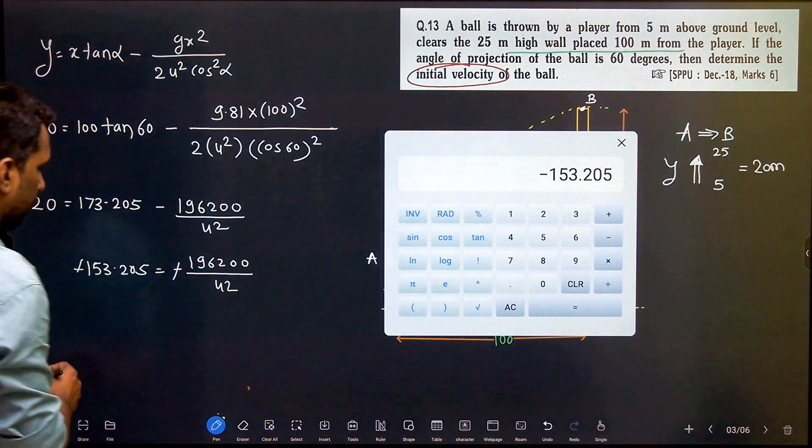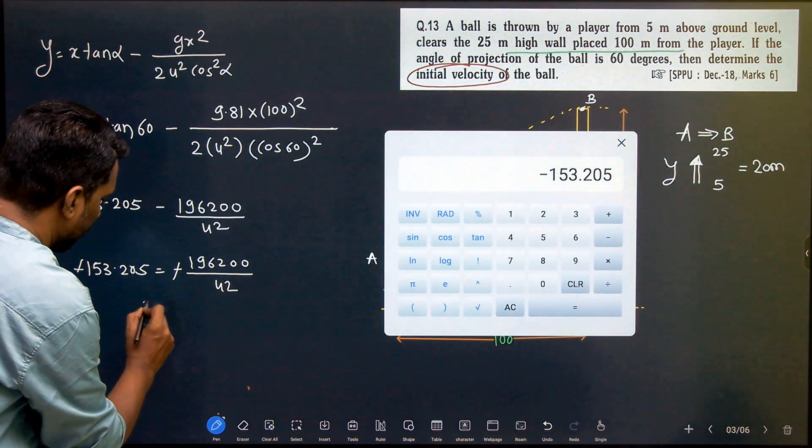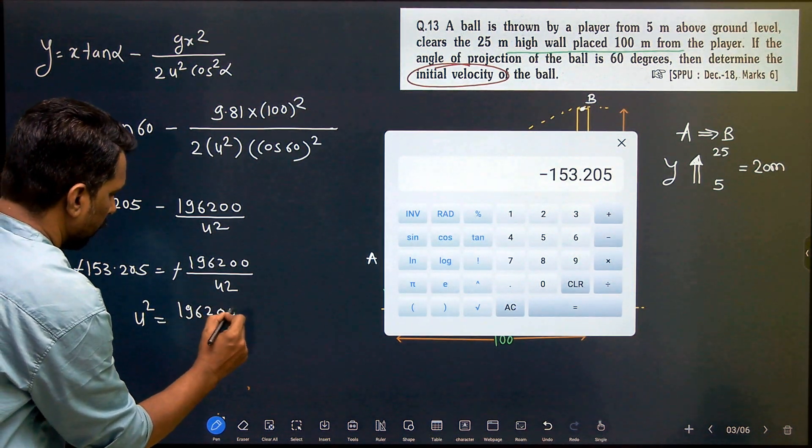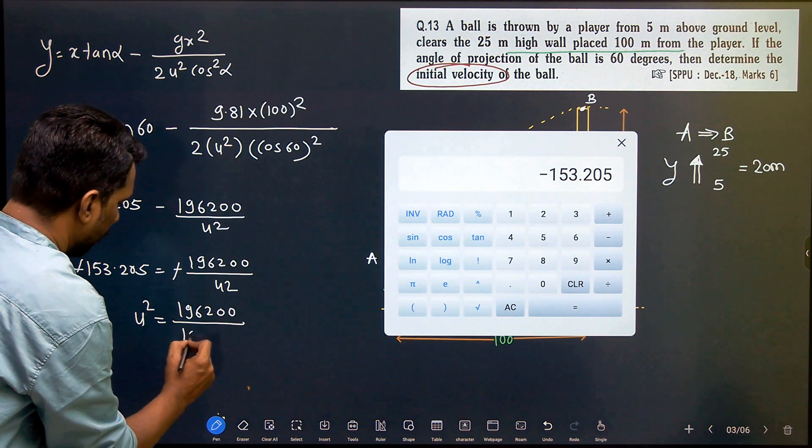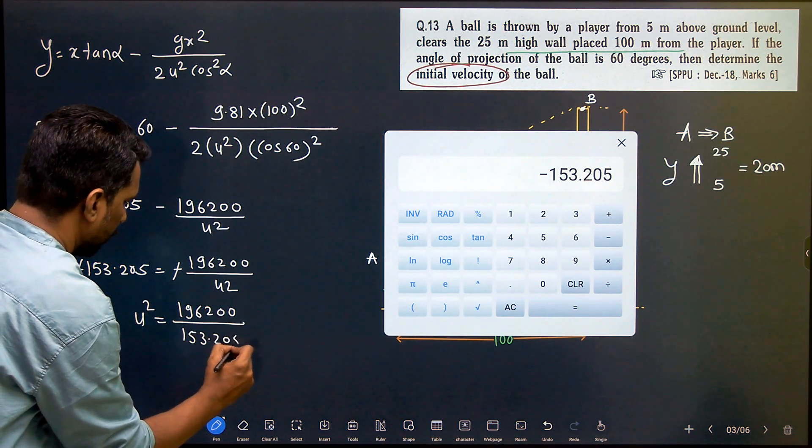U square is the only unknown. 20 minus 173.205 equals minus 153.205, which equals minus 196200 divided by u square. Minus minus will get cancelled. U square equals 196200 divided by 153.205.